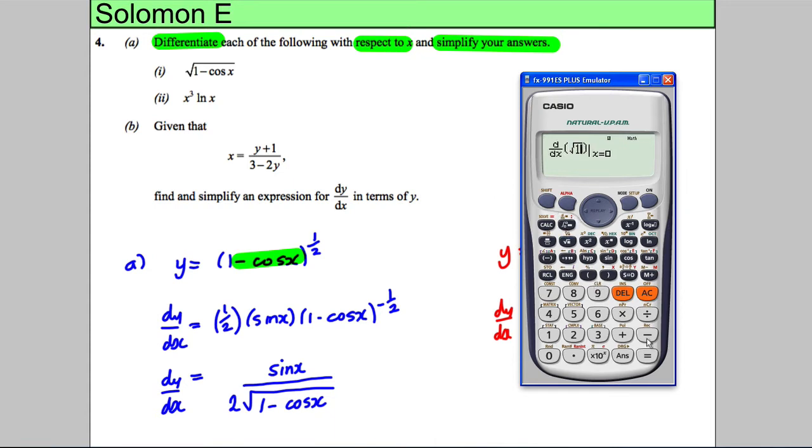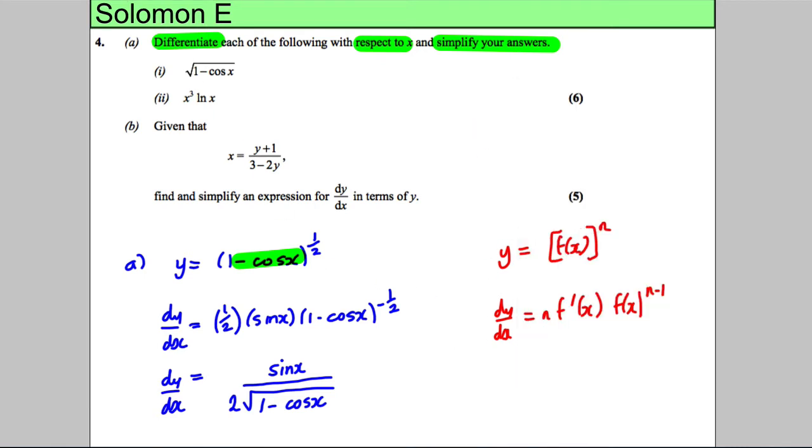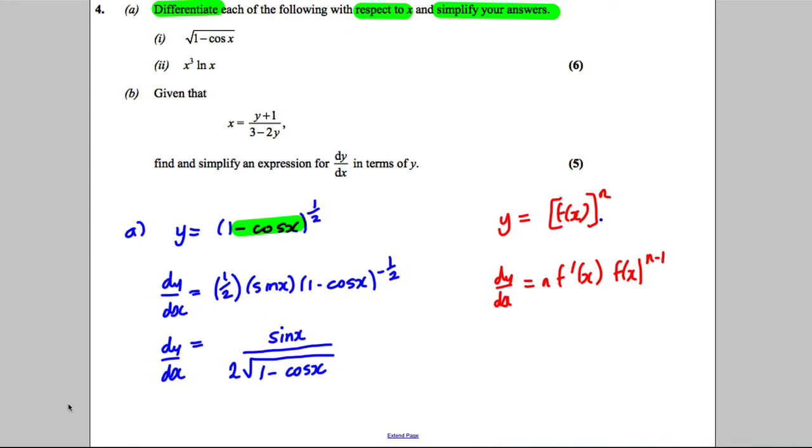Taking d/dx of the square root of 1 minus cos X, I'll put X equals 1 and get 0.6205. Now if I put 1 into the derivative function, sine of 1 over 2 times the square root of 1 minus cos 1, I get 0.6205. So the differentiation is correct.